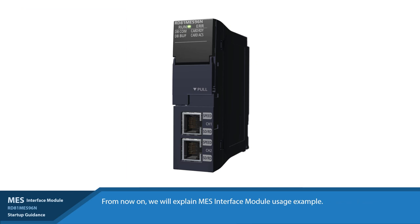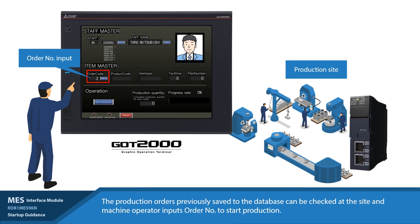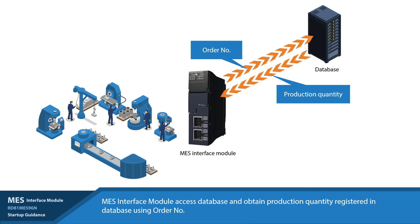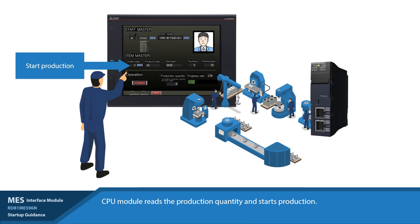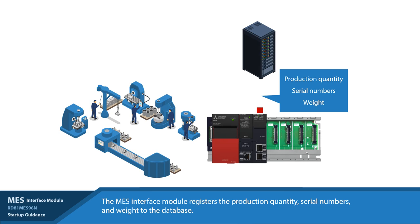In this example, the production order already exists in a customer's database. This order contains key information on what and how many of a particular product they need to manufacture. To begin the manufacturing process, the operator will enter the order number into the HMI. The MES interface module will then reach out to the database and pull production data based on the provided order number. The production data for that unique order will then be used by the PLC to produce the requested product. During and after the manufacturing process, the MES interface module will then send data back to the database.